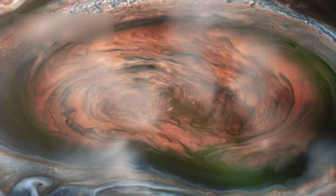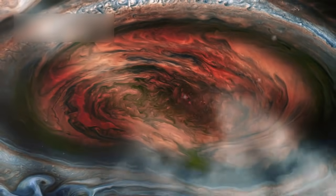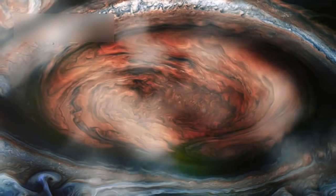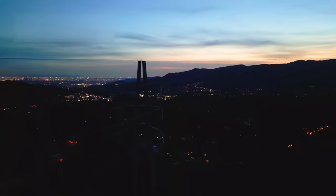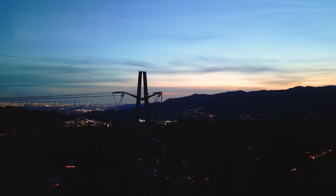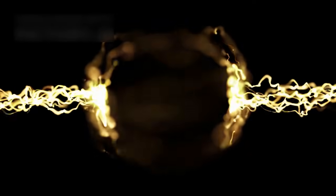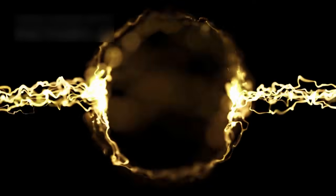Betelgeuse is classified as a red supergiant, a rare and short-lived phase that massive stars enter after exhausting hydrogen fuel in their cores. When this happens, the balance between gravity and energy production shifts dramatically. The core contracts while the outer layers expand outward to enormous sizes. This expansion cools the surface, giving the star its famous red color and swollen appearance.